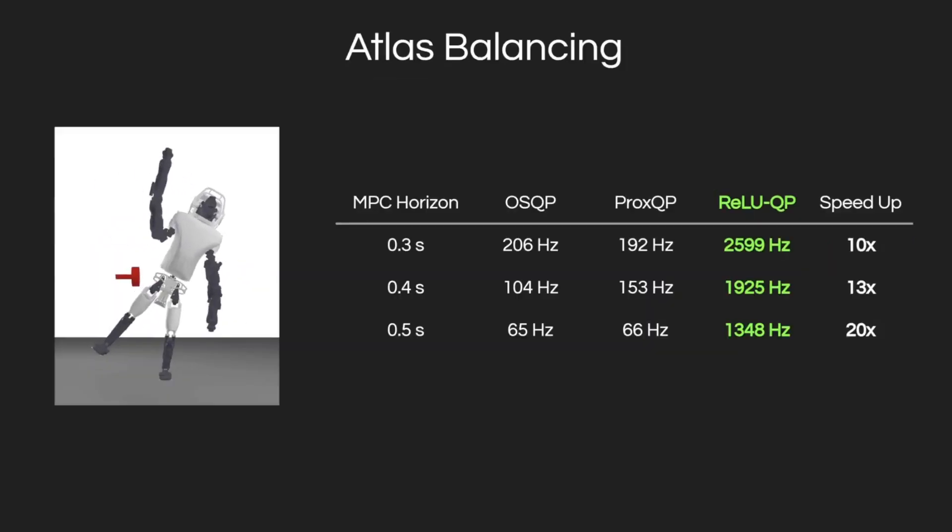Next, we set up a one-foot balancing task on a whole-body ATLAS model with 58 states, 28 controls, and control limits, and tested three different MPC horizons. RELUQP achieved 10 to 20 times speed improvements, running at up to 2600 Hz and opening the door to using MPC as a fast, low-level controller for high-degree-of-freedom robots.